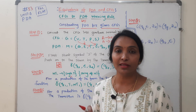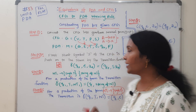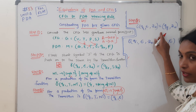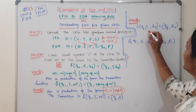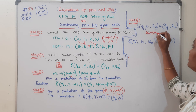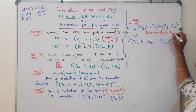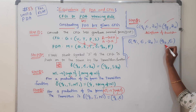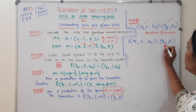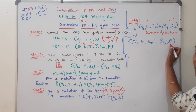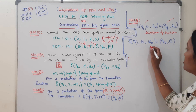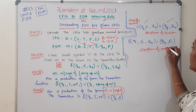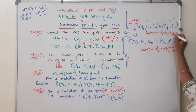The final step is acceptance of the PDA. Acceptance of PDA has two ways. One is acceptance by final state — from the first state Q0 with Epsilon to the final state. The second is acceptance by empty stack. This is the end of the acceptance step.